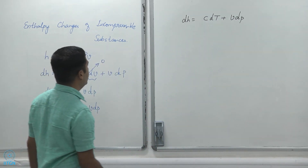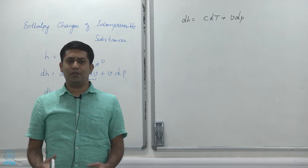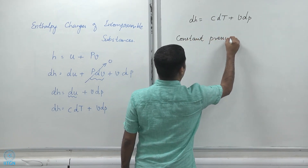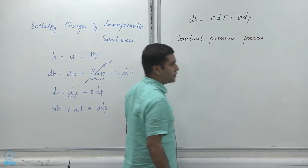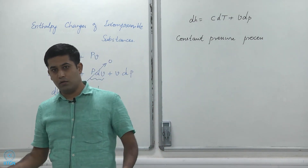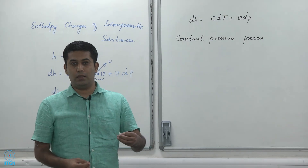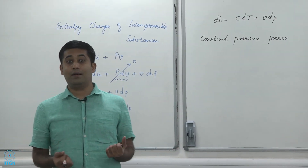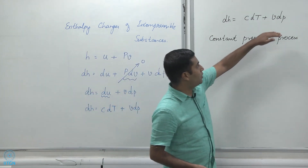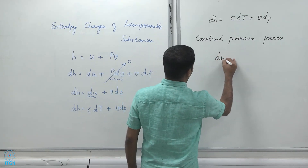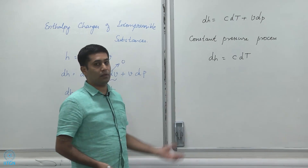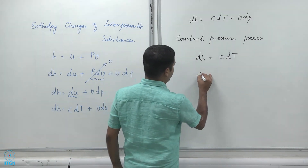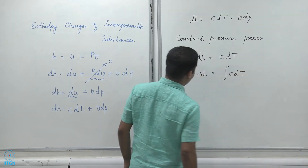In many cases we have a constant pressure process. For example, in a home water heater, water flows in and out while its temperature changes but the pressure does not change much. Water is an incompressible substance undergoing a constant pressure process, so the v dP term vanishes and we can write dh equals C dT, and therefore Δh equals the integral of C dT.